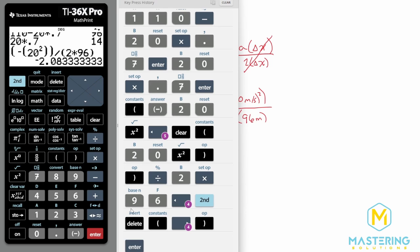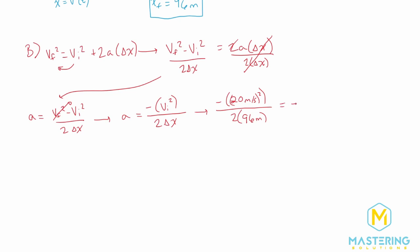The answer is negative 2.1 meters per second squared — that is the acceleration, or deceleration, needed to stop right at the intersection.